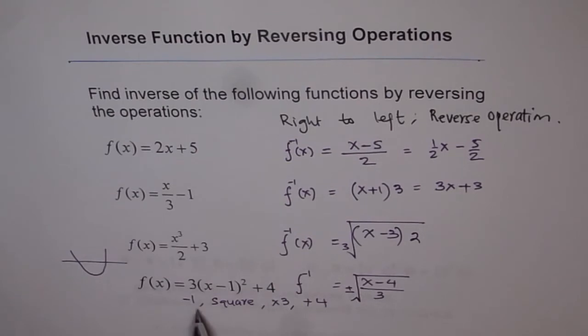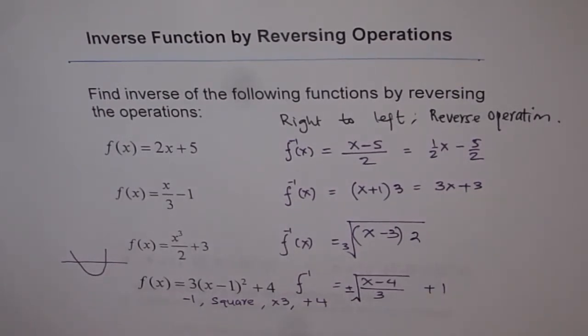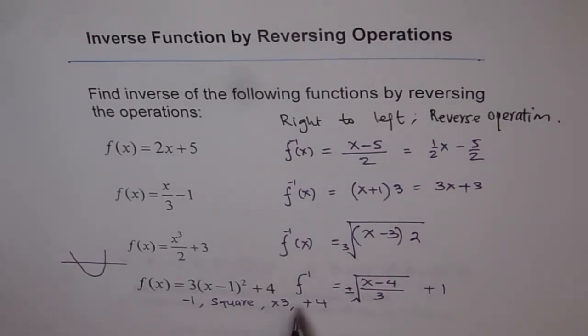Here, the next and the last operation is, minus 1. So what should you do with this? Plus 1. So that is your answer for this particular function. So, inverse of this function should be plus minus square root of x minus 4 divided by 3 plus 1.